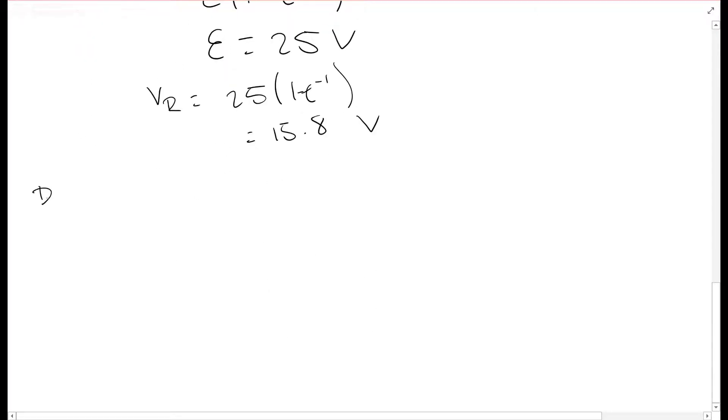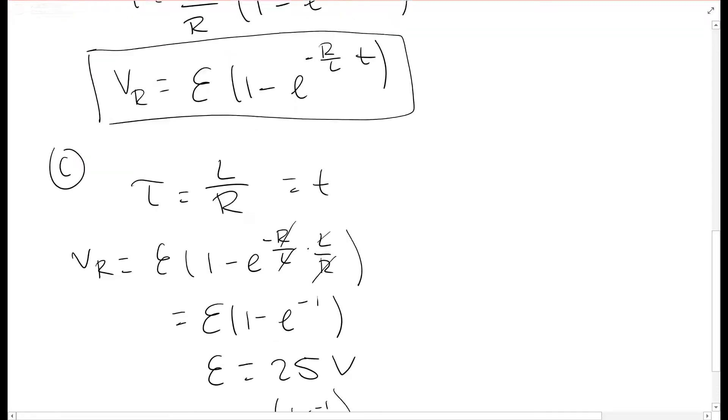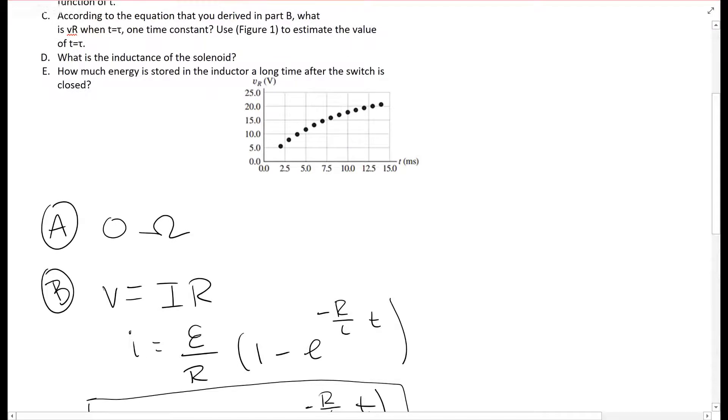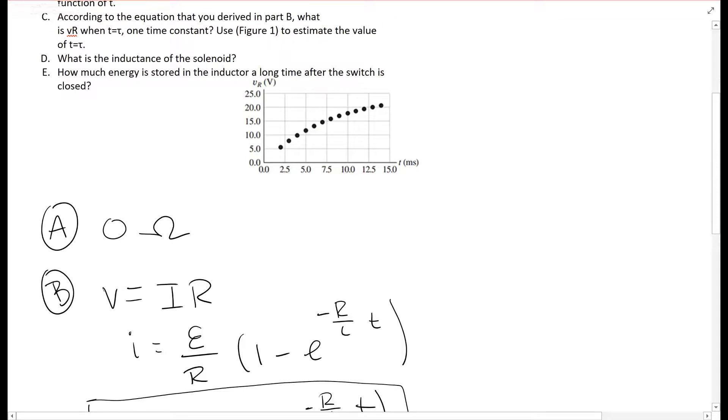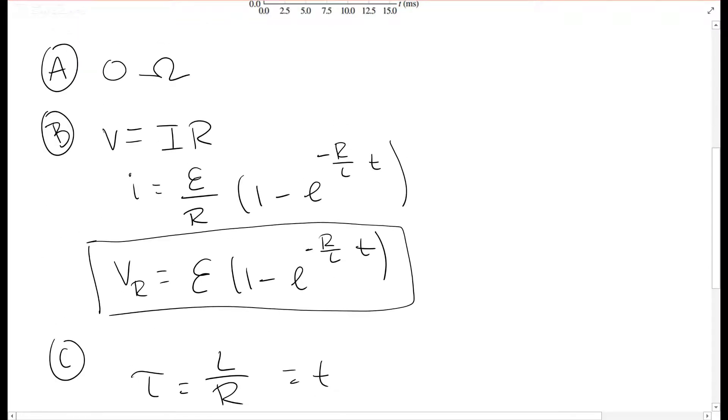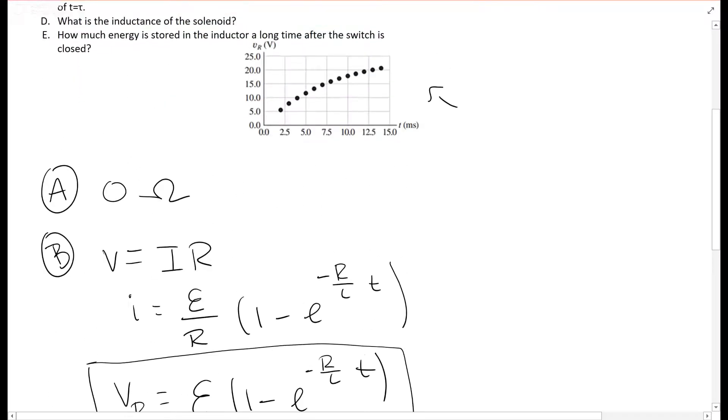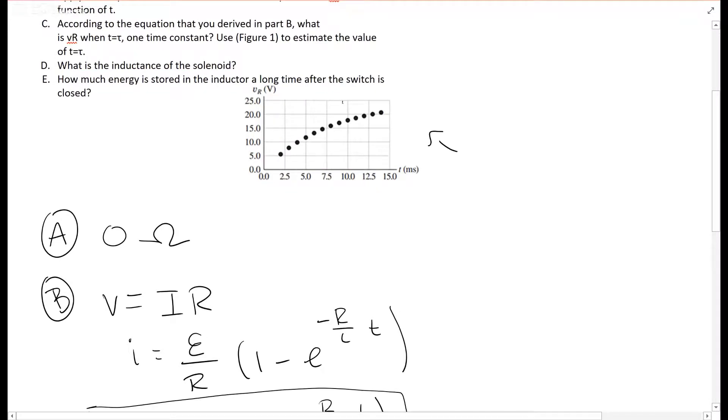Now let's look at D. D is asking you, what is the inductance of the solenoid? So for this, what we're going to do is you can finally use this graph. So in our equation for Vr, we need a Vr and we need a time, and what do you know? This graph gives that to you. So if you look right at this point, we can find our first point.